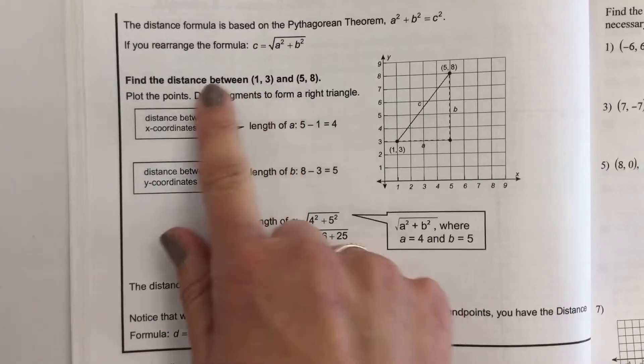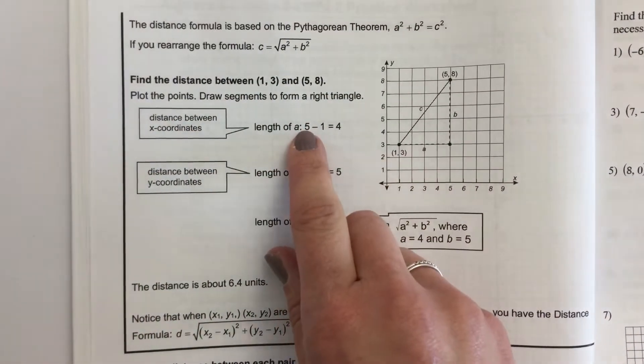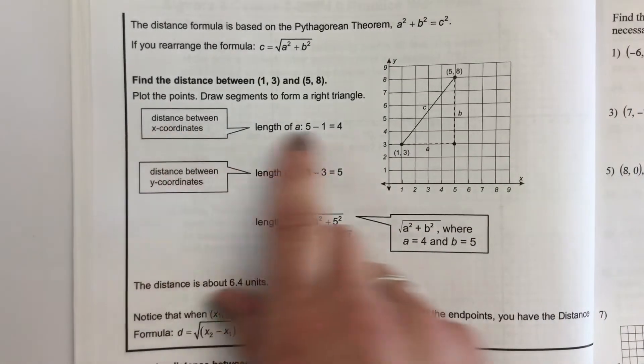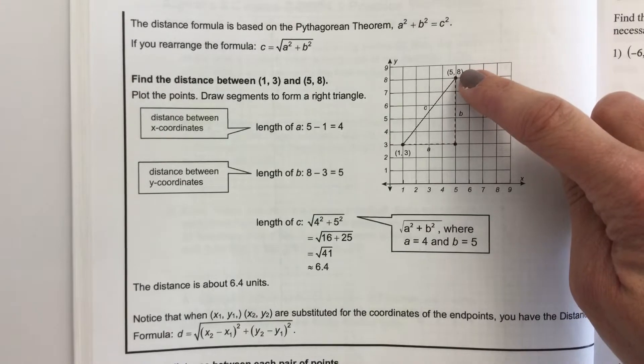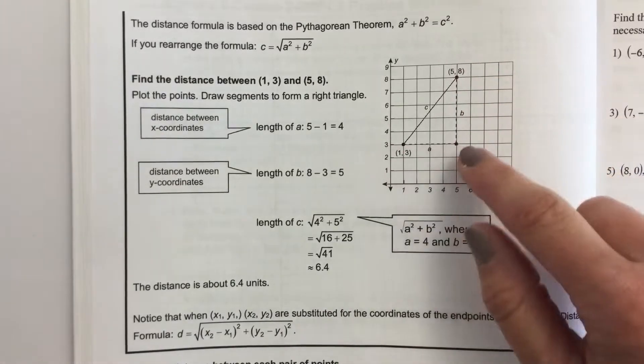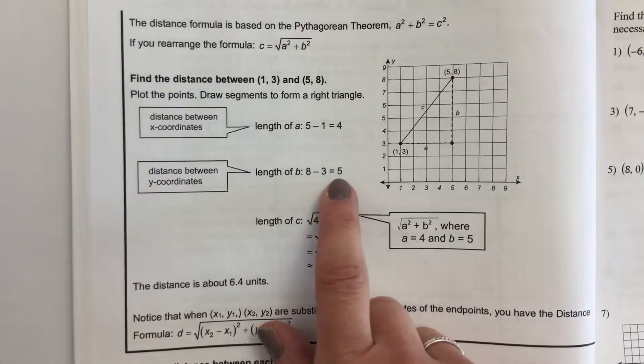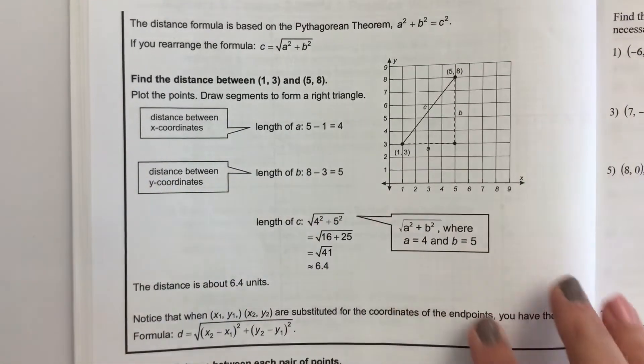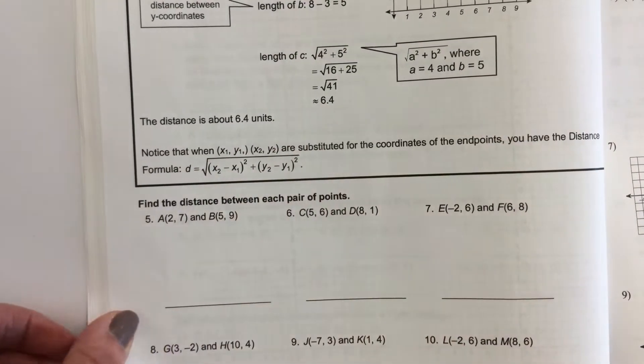This shows how the distance formula is found. By subtracting the distance between the x coordinates, 5 minus 1, it gives you the side length of a. And then by doing the same thing, 8 minus 3, the distance between the y coordinates, it gives you the other side length. So they've created a formula using those coordinates.